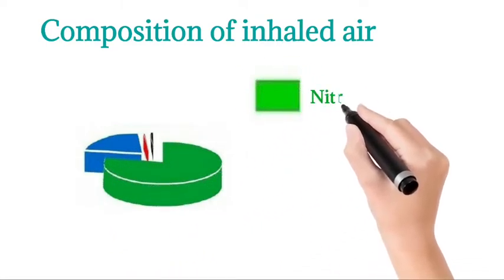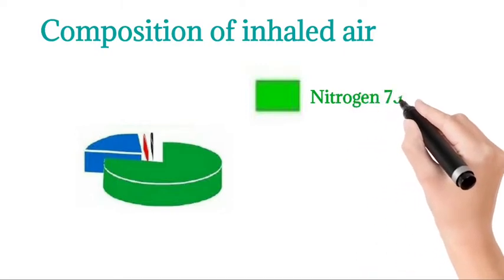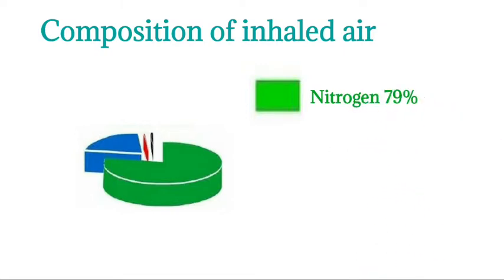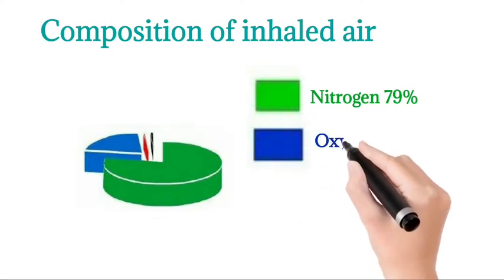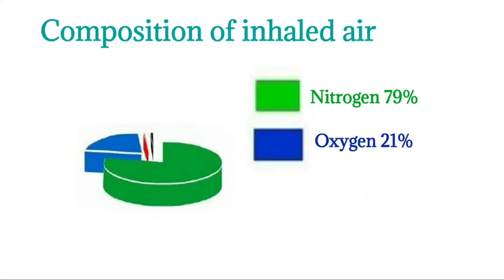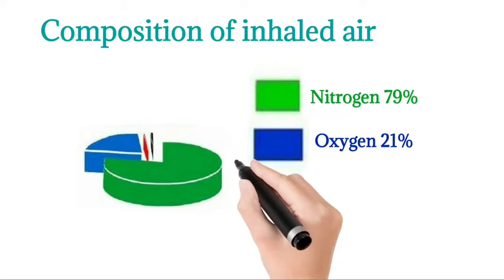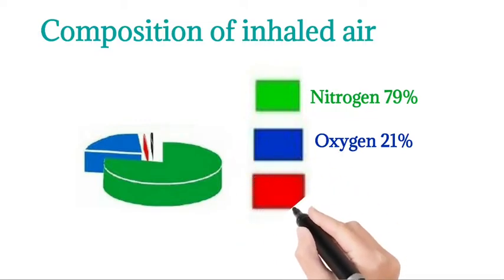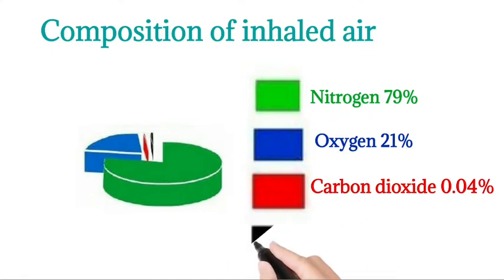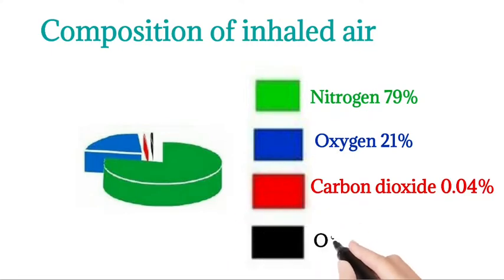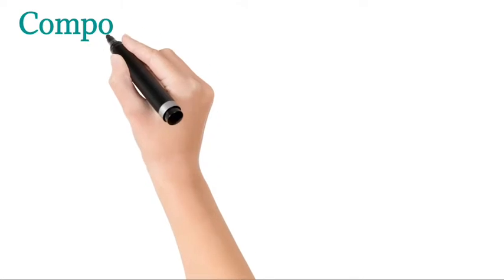The blue color represents oxygen, which is about 21 percentage in inhaled air. The red color represents carbon dioxide, which is about 0.04 percentage in inhaled air. The black color represents others such as water vapor and dust particles.